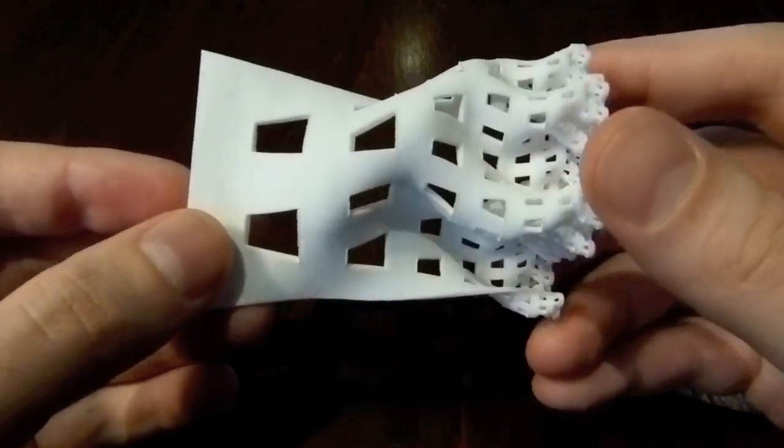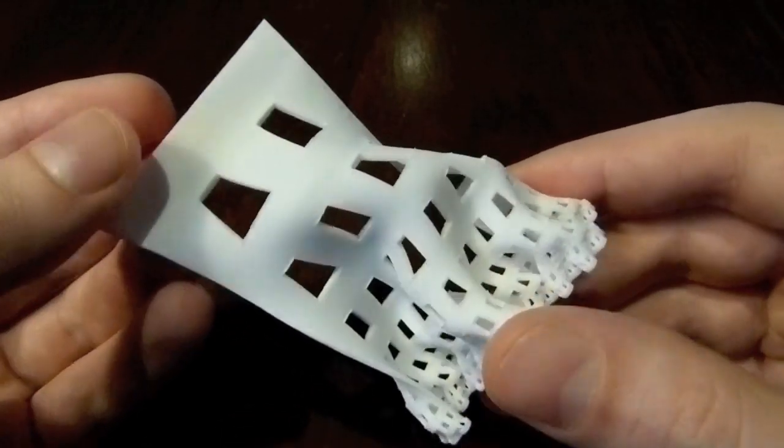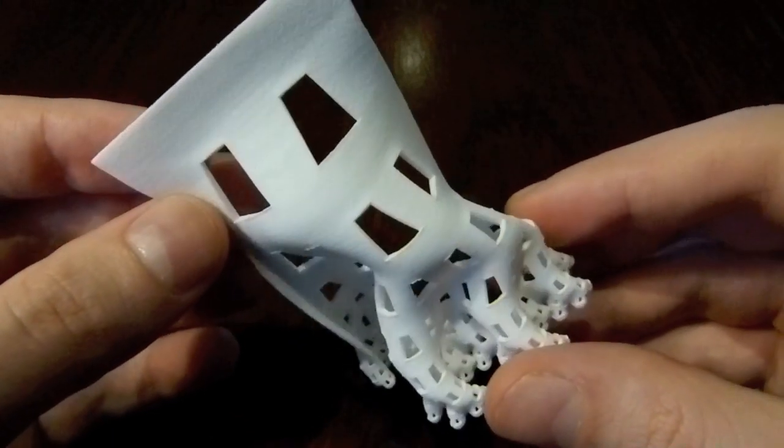So the Dragon Curve is a fractal curve, and it's produced by an iterative process, and this surface describes that process.